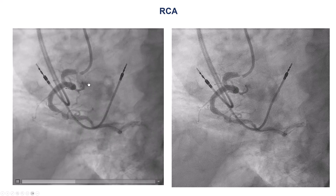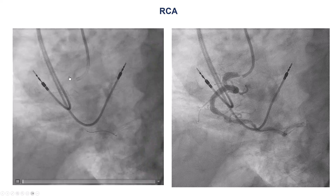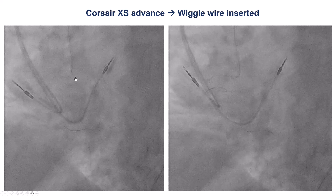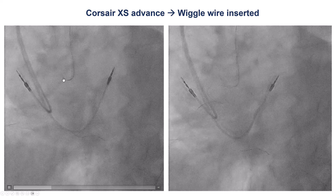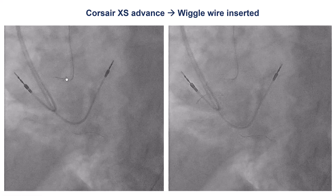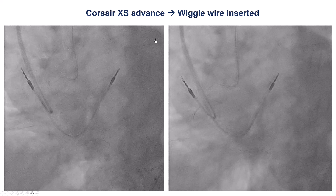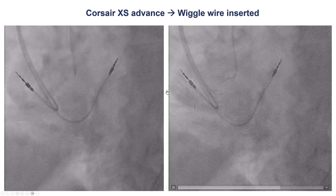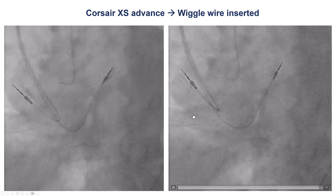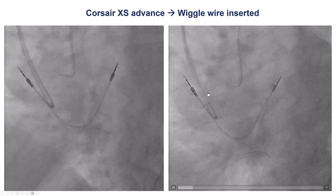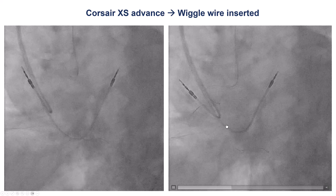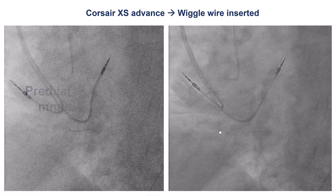After doing this, we were able to visualize the right coronary artery better, and indeed there is a very high-grade ostial stenosis. The polymer-jacketed Sion Black wire did not provide very good support, so we wanted to exchange it for a more supportive guide wire. To do that, we used a Corsair microcatheter, which was advanced as far down as we could into the vessel. We can see the severe tortuosity of the right coronary artery. We then removed the Sion Black and inserted a wiggle wire, which has a wavy pattern that provides very good anchoring and support for the guide catheter.